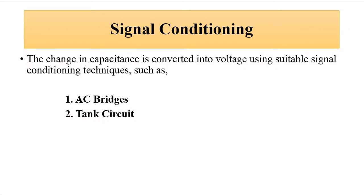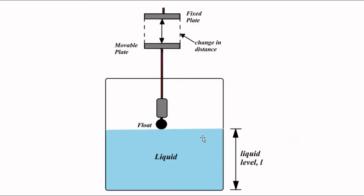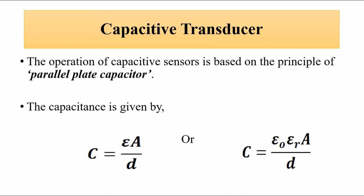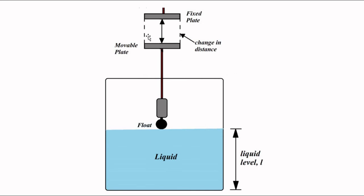In the first capacitive sensor method we previously discussed, the change in relative permittivity of the medium was taken into consideration — two capacitor plates were connected at two ends of the tank, and as the liquid level rose, the relative permittivity of the medium between the plates changed, causing capacitance to increase or decrease. In this current method, the parameter undergoing change is the overlapping area (first arrangement) or the distance between the capacitor plates (second arrangement).